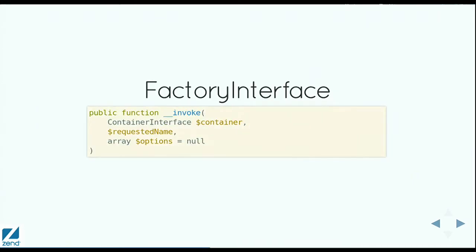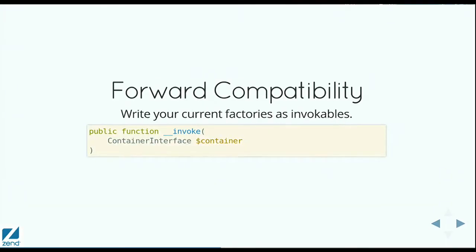The big break, though, is factory interface. So if you're implementing factory interface, we now have an extra required argument and an optional argument. That said, you can make your code forward compatible really easily by just making your factories all invokables and either not type-hinting the first argument or type-hinting on container interface, and now your code will just work. We did this already in App Agility — any factories created in App Agility, we're just doing invokables, not even type-hinting the first argument, which means they are drop-in. They just work with Service Manager 3, which is great.